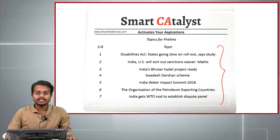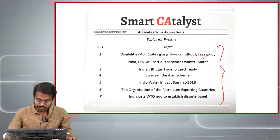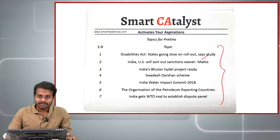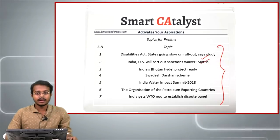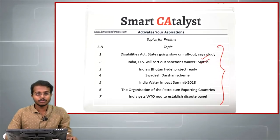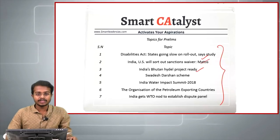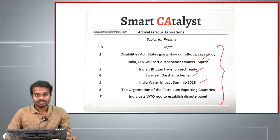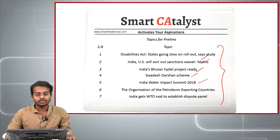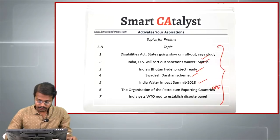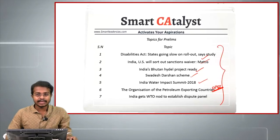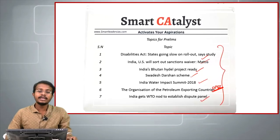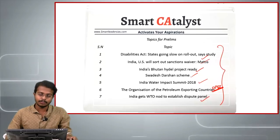The first one is the Disabilities Act of 2016. The second is that India-US will sort out the sanction waiver. Third is about India-Bhutan relations and the newly proposed Hydel project. Fourth is the Swadesh Darshan scheme. Fifth is the India Water Impact Summit of 2018. Sixth is about OPEC. And the last one is that India gets WTO nod to establish a dispute panel regarding the US tariffs on steel and aluminium imports.